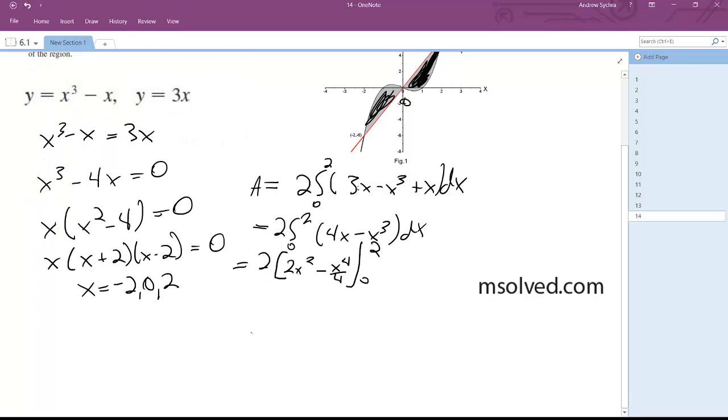And we add these together, so area is going to be equal to 2 times 8 minus 4, and area is equal to 8. And that's it.